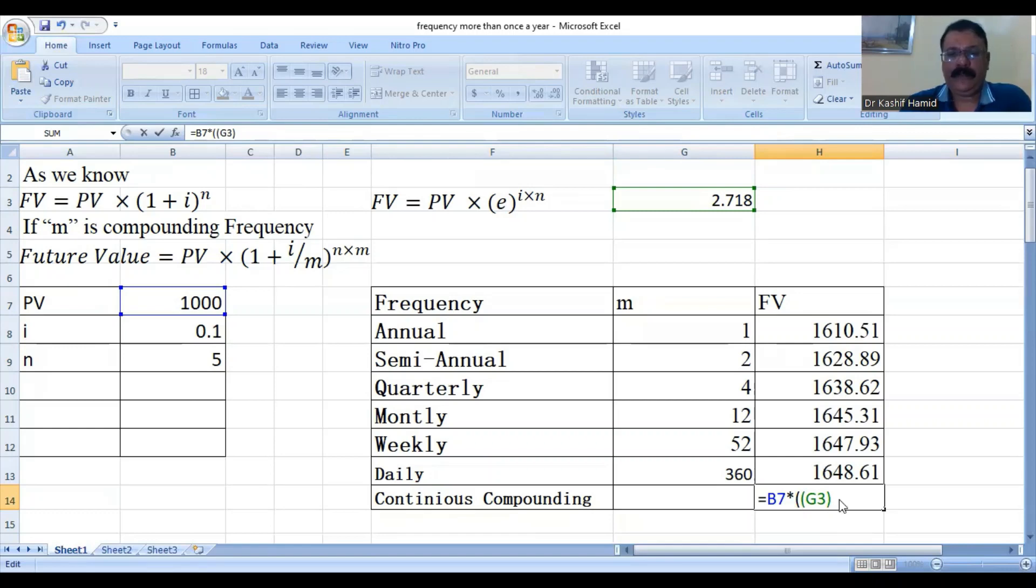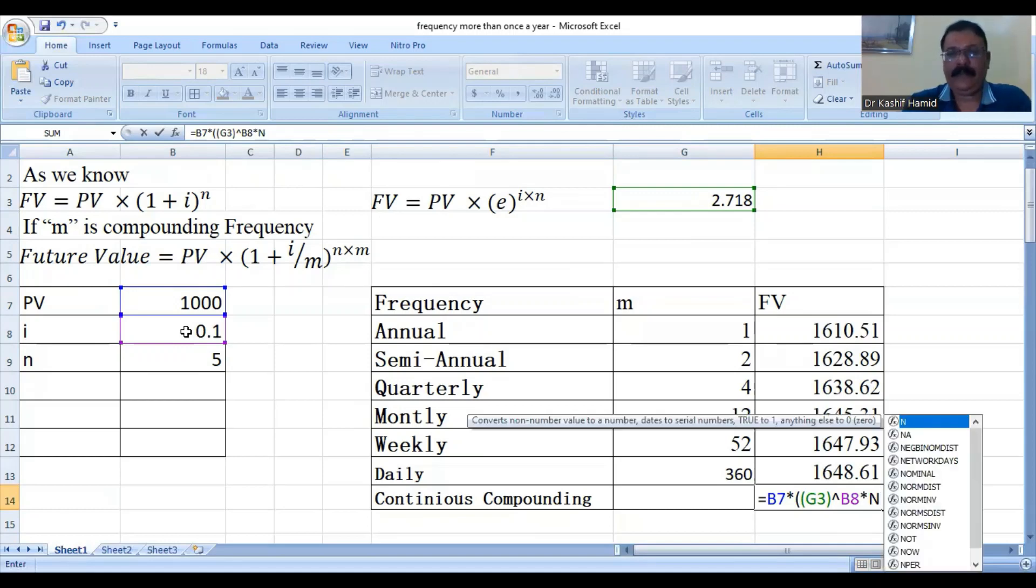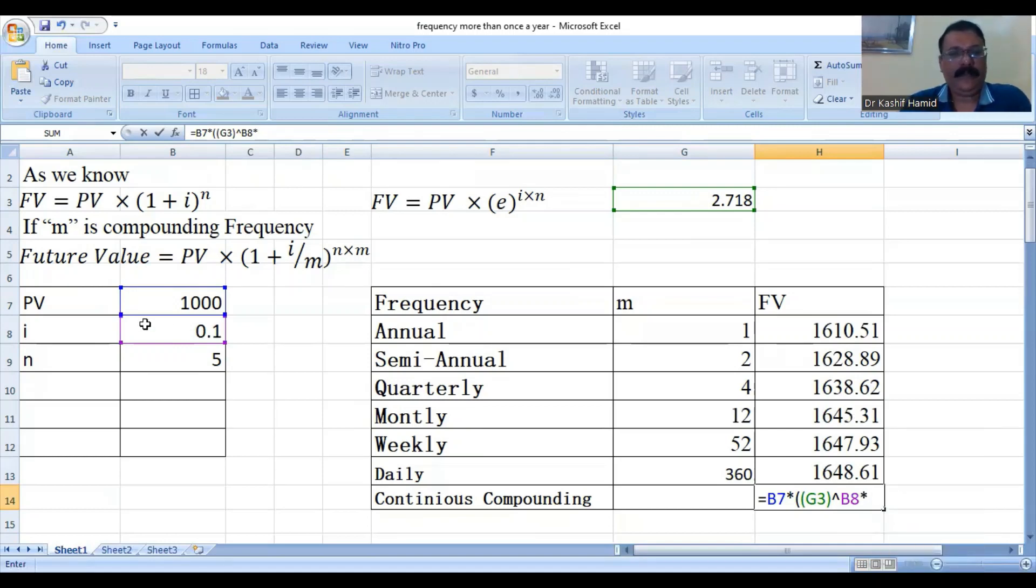Its power is i multiplied n, which gives us 1,648.63.